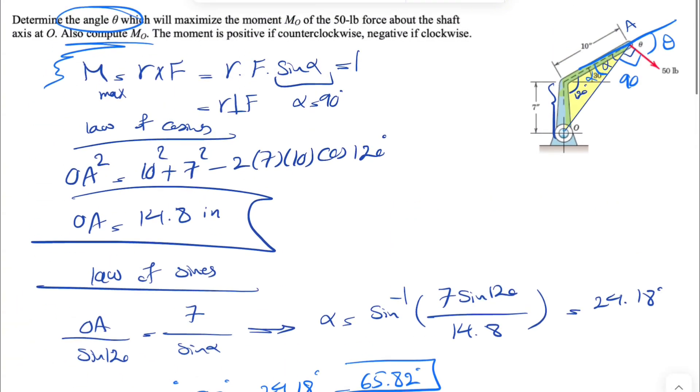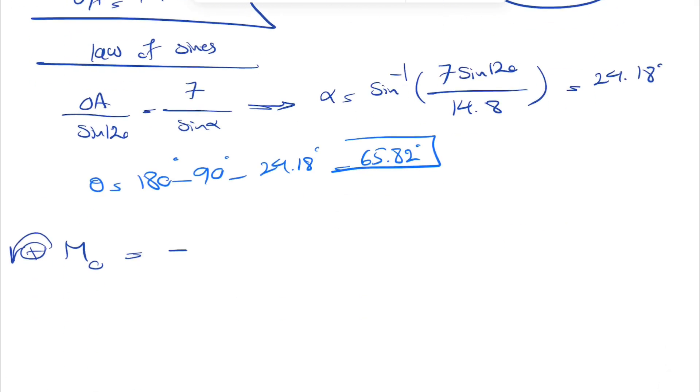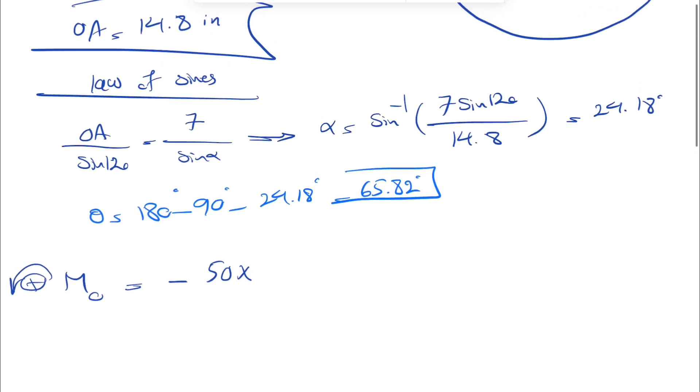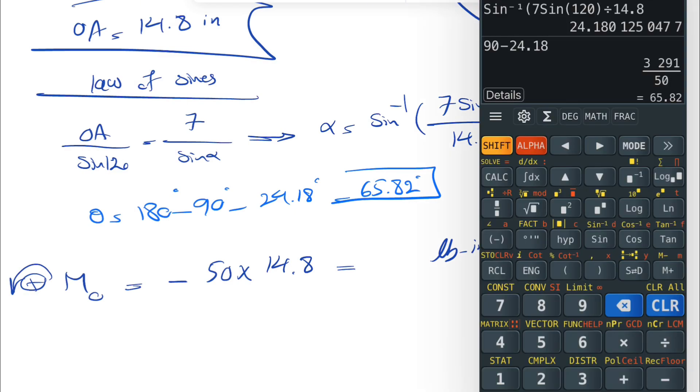If you look at the moment, we'll see that the moment about O is in this direction, so it will be a negative moment since it's clockwise. The force is 50 pounds and our R was 14.8. This is going to give our moment in pound-inches, and it will be clockwise since it's negative. Let's see what we get: 50 times 14.8 - that's going to be minus 740.